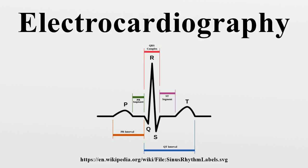One of the primary rhythms that can cause the heart rate to be slow and symptomatic is known as a heart block. There are many types of heart block, but the most common is an AV block. There are also many rhythms that can cause the heart rate to be fast, the most common of which is sinus tachycardia.